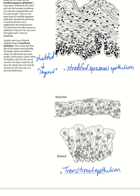Transitional can mean two things. It can mean that it physically changes — for example, the bladder stretches when it's full and is relaxed when it's empty, that is a transition or a change. However, transitional can also represent an area where one type of epithelium is transitioning into another, so we'll have a little bit of multiple tissue type characteristics in the same area.